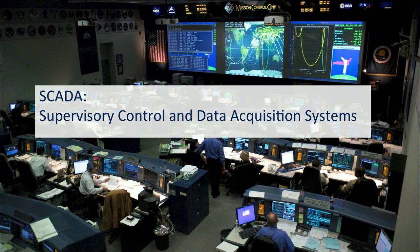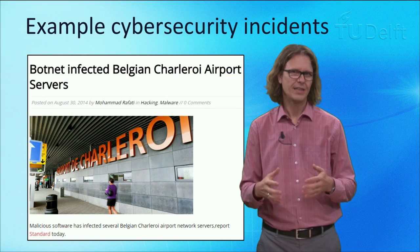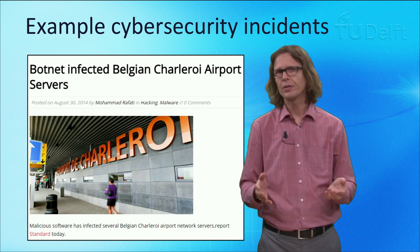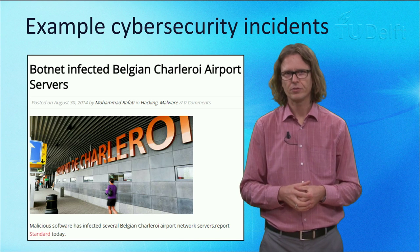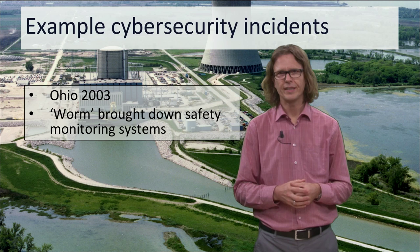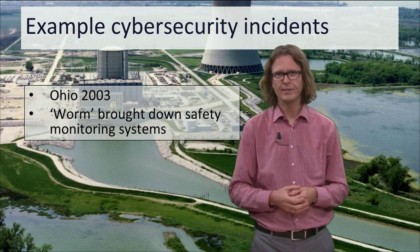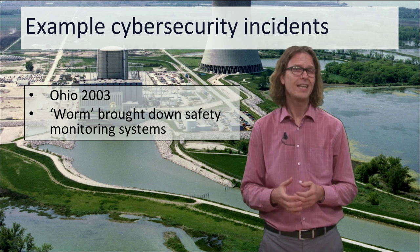Over the past years you've probably seen all kinds of reports on cyber security incidents in critical infrastructures. Many of them involved so-called SCADA systems — supervisory control and data acquisition systems. Just a few weeks ago, for example, it was reported that malware — that is malicious software — had been running on the servers of the airport of Brussels Charleroi. Apparently, data was also exfiltrated. This is the latest example of a long history of malware incidents in critical infrastructure systems. A famous early example made headlines in 2003, when the Slammer worm infected machines in a nuclear power plant in the state of Ohio in the United States. The worm outbreak brought down the safety monitoring systems in the nuclear plant for nearly 5 hours.